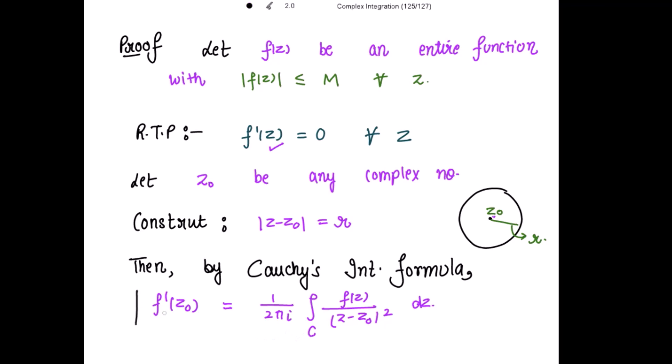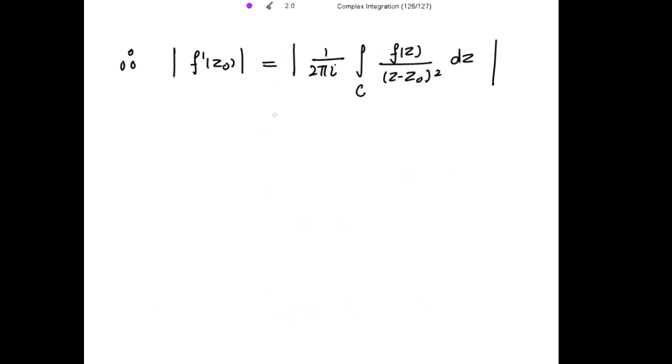Now let's take mod on both the sides. So this mod is further less than or equal to... the mod of iota is 1, we all know that. So this is 1 over 2π integral over C, and this mod is further less than or equal to mod of f(z) divided by mod of (z minus z_0) to power 2 and mod of dz.